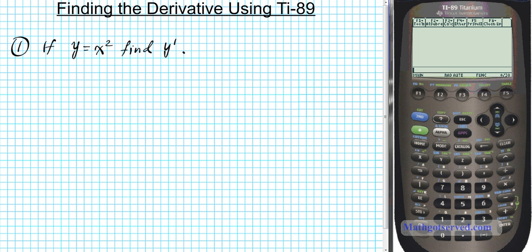This prime notation here is the Lagrange notation for derivatives. But the notation that the calculator uses on the home screen for differentiation is the Leibniz notation. So what we're going to do is find the derivative manually first and then go over how to do it with our calculator.